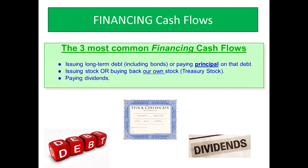It's a cash inflow if you're getting a long-term loan, and as you pay off the principal, that's a cash outflow — but they're both financing cash flows. Issuing stock in your own company is a financing cash flow. Or if you buy back your own stock — treasury stock, which is when a company buys back its own stock — that is a financing cash flow. The third most common is paying dividends, which is also a financing cash flow.